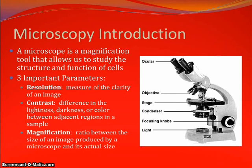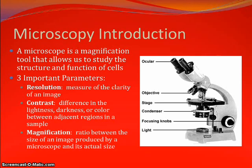Here's a quick introduction to current-day microscopy, and here is a photo of a compound microscope similar to the ones we used in class. A microscope is a magnification tool that allows us to study the structure and function of cells. Microscopes cover three important parameters: resolution, which measures the clarity of an image; contrast, which shows the difference in lightness, darkness, or color between adjacent regions in a sample; and magnification, which is the ratio between the size of an image produced by a microscope and its actual size.